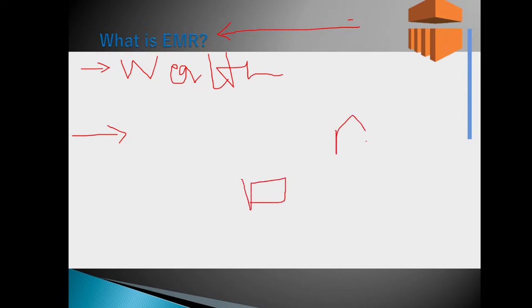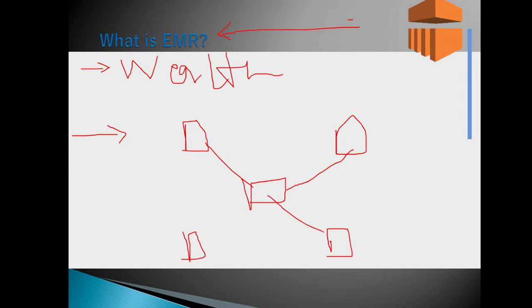EMR is basically a collection of EC2 machines working together as a group — as a team. They will do your data processing, clean your data, massage your data, and then you can use it for further analysis.